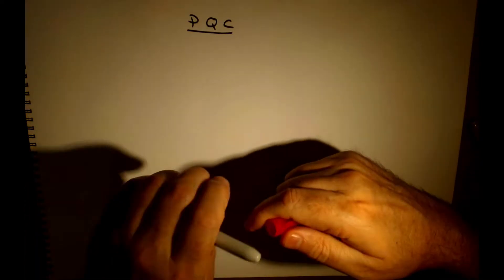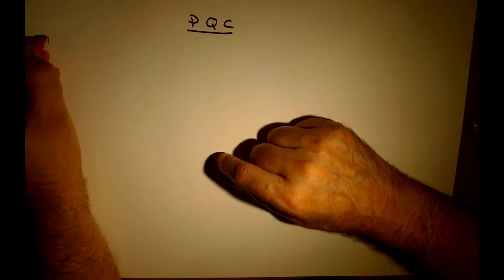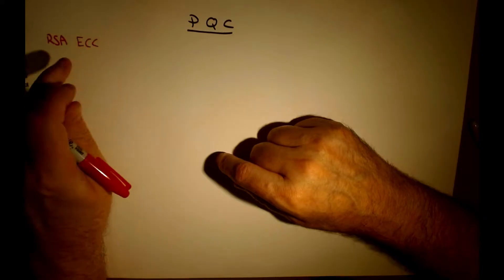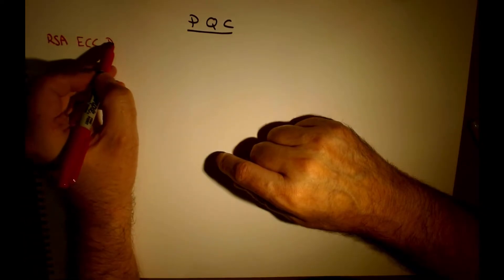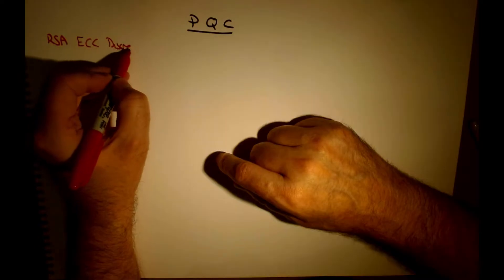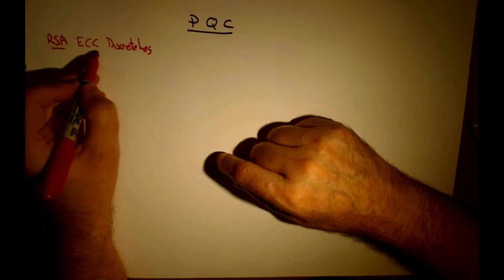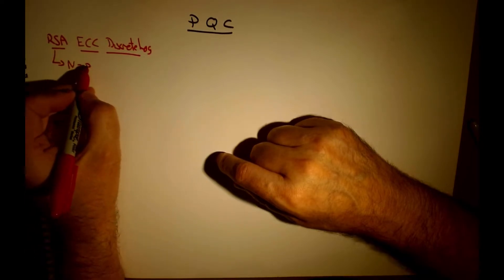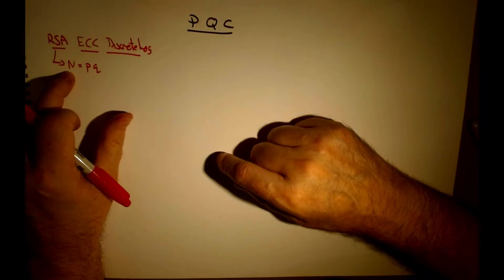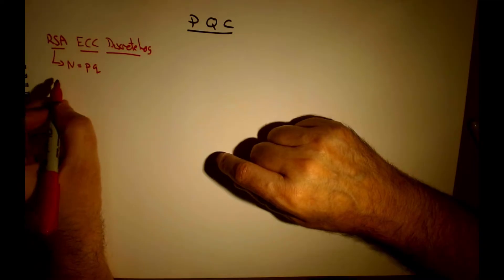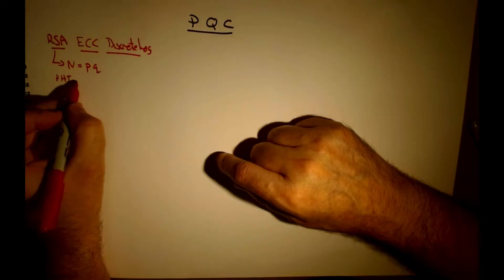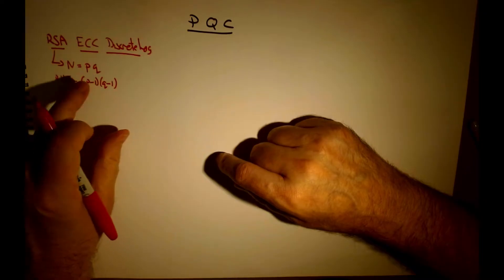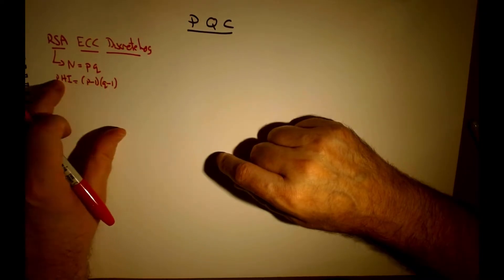Our existing cryptography typically involves RSA, elliptic curve, or ElGamal using discrete logs. With RSA, we select two prime numbers P and Q, and we work out a modulus. We then work out a value of phi, which is equal to P-1 times Q-1. Only by knowing these two prime numbers can we work this out.